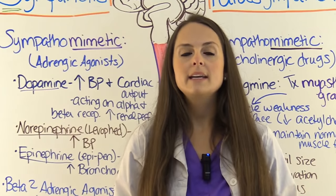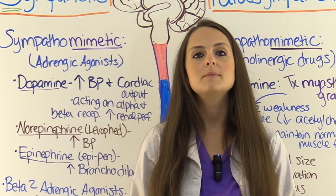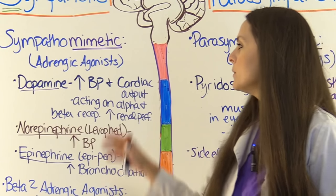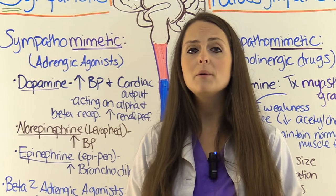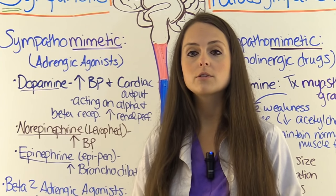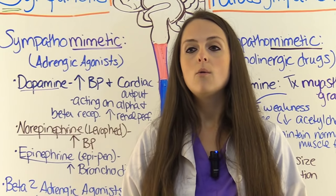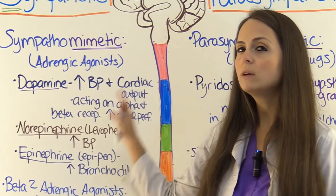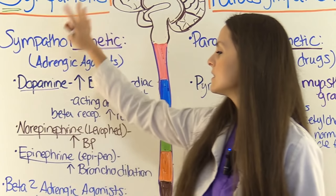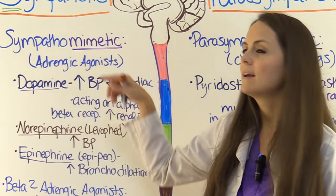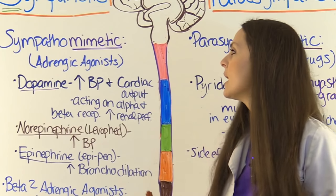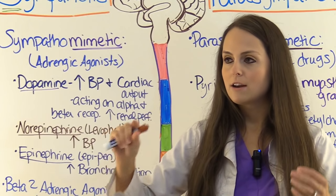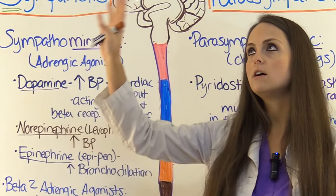Now let's look at medications that can stimulate each system. Sometimes we want these systems stimulated based on what's going on with the patient. For the sympathetic: why would we want to stimulate a fight or flight response? A patient in shock with super low blood pressure, or having severe bronchoconstriction from anaphylaxis — their sympathetic nervous system isn't doing its job. These drugs are called sympathomimetics — they mimic the sympathetic nervous system — also called adrenergic agonists, because the post-ganglionic neuron releases norepinephrine causing all those fight or flight responses.